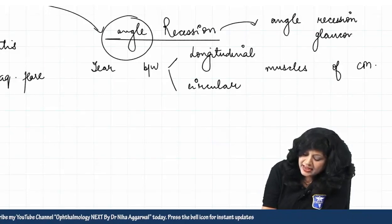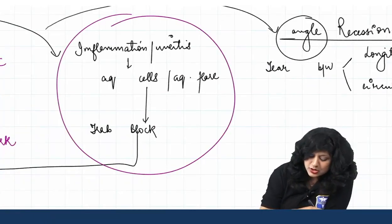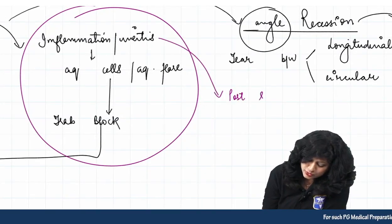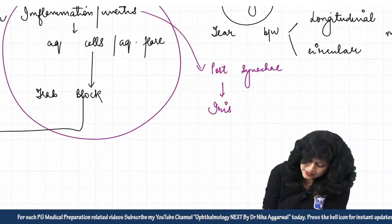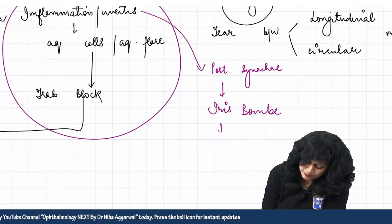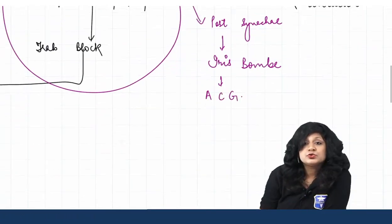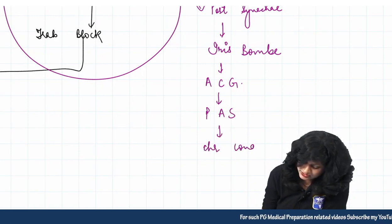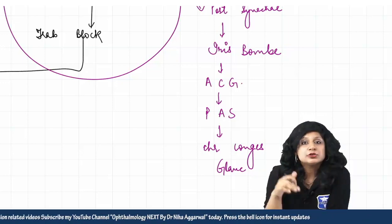Can secondary angle closure glaucoma also occur? Due to the uveitis from inflammation, you could have posterior synechia. Due to the posterior synechia, we can have the formation of iris bombé. Due to iris bombé formation, you can have acute congestive glaucoma. Due to repeated acute congestive glaucoma, peripheral anterior synechia can form, leading to chronic congestive glaucoma. So secondary angle closure glaucoma can also occur in this case.